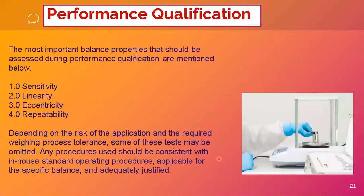Now, performance qualification: the most important balance properties to assess during performance qualification are sensitivity, linearity, eccentricity, and repeatability. Depending on the risks of the application and the required weighing process tolerance, some of these tests may be omitted, but any in-house procedure used should be consistent with the standard operating procedure applicable for that specific balance and adequately justified. In-house tests must at least fulfill the purpose of all four listed tests.